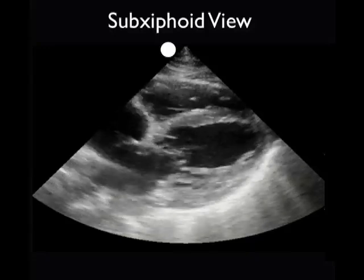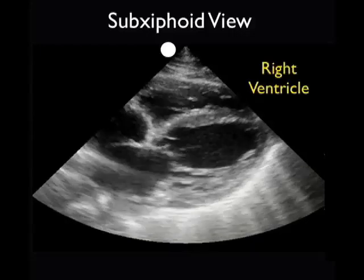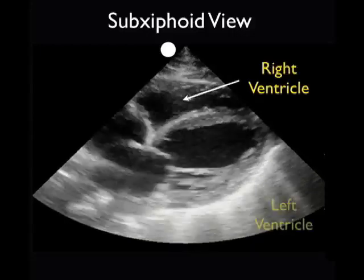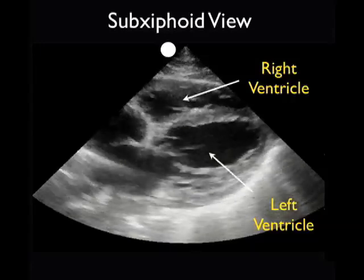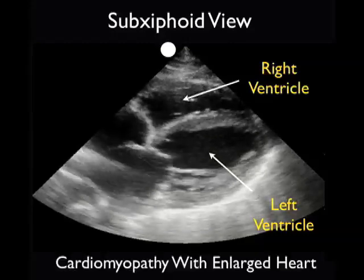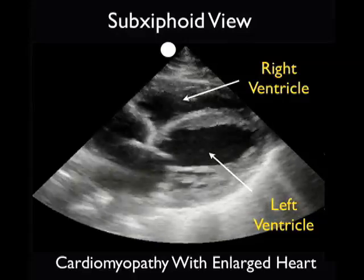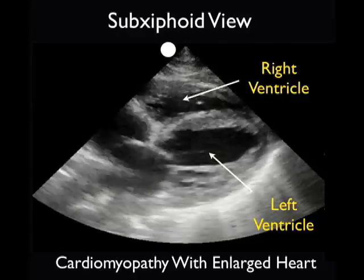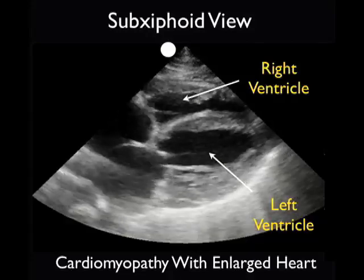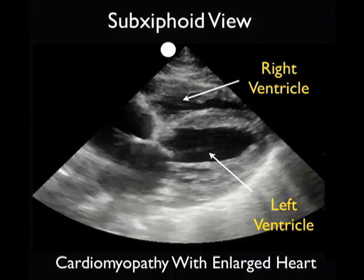In that last clip we noted good contractility of the left ventricle from diastole to systole. Let's contrast that with this clip from a patient who presented with shortness of breath and advanced cardiomyopathy. We see the right ventricle just below the liver, anterior to the left ventricle. What we see here is a poorly contracting and dilated left ventricle consistent with cardiomyopathy. However, note the absence of any significant dark anechoic fluid collections consistent with a pericardial effusion.